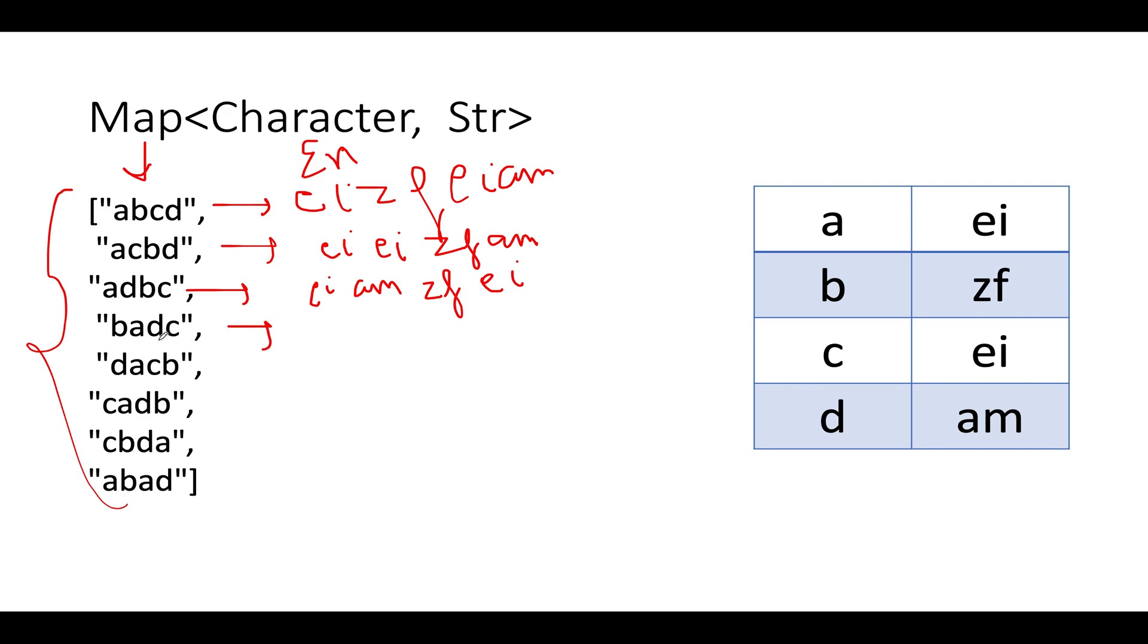Let's proceed ahead. Next we see BADC, so B points to Z F, then we have A as E I, then we have D as AM, then we have C as E I.